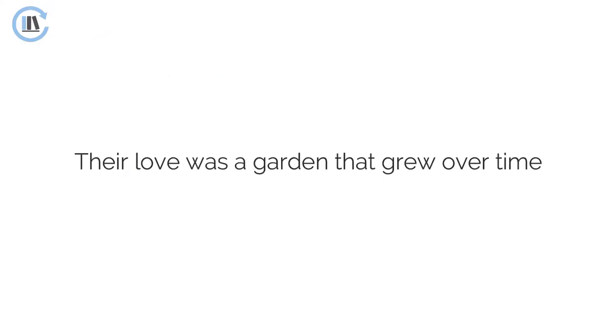For example, consider the sentence: 'Their love was a garden that grew over time.' How can love be a garden? Love is not an actual garden. However, the two have something in common — they both start small and grow with time if we take good care of them. We use the garden, a physical thing, to describe something much deeper about love.